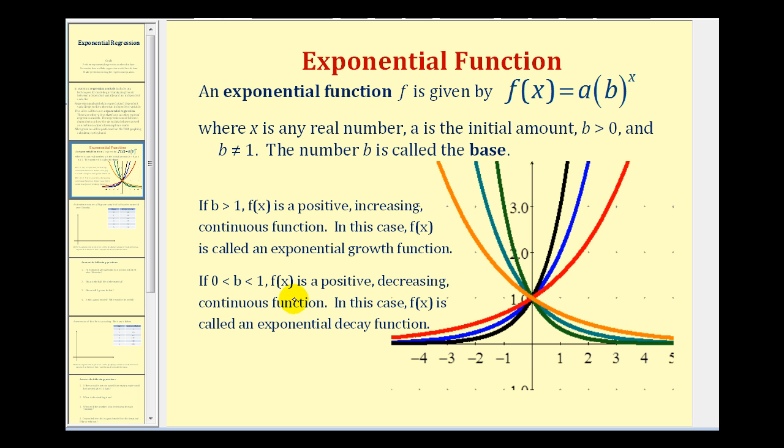And if b is between zero and one, we have a positive decreasing continuous function, which would be exponential decay as we see here. So if our scatter plot fits the pattern of any of these functions, exponential regression would be a good choice. Let's go and take a look at our first example.